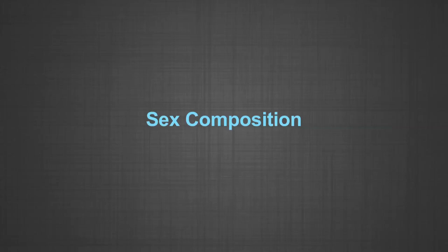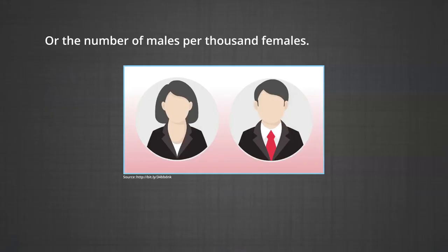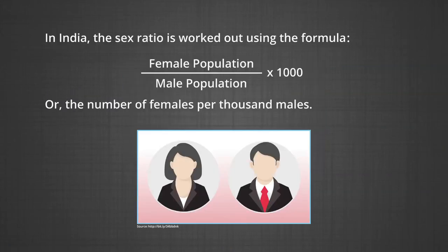The first aspect of population composition that we are going to discuss is sex composition. The number of women and men in a country is an important demographic characteristic. The ratio between the number of women and men in the population is called the sex ratio. In some countries, it is calculated as male population upon female population into 1000. In India, the sex ratio is worked out as female population upon male population into 1000, or the number of females per 1000 males.